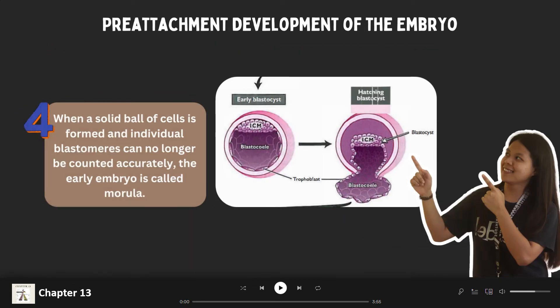After the eight-celled stage, a ball of cells is formed, and this embryonic stage is referred to as the morula. This is when a solid ball of cells is formed and individual blastomeres can no longer be counted accurately. The morula stage is achieved by the series of cleavage divisions of the early embryo, beginning from the single-cell stage of the zygote.